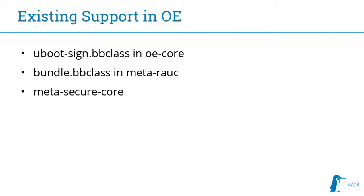You can't easily switch which keys you are using to sign, because you want to have different keys for development and for release. We have support in MetaRAUC for signing bundles — it's important for updating to make sure it's actually authentic. And there's a MetaSecureCore layer; the maintainer has a lot of different technologies supported for basically x86 systems with TPMs and so on, but to me it looks more like an exploration of these technologies than something built to be reusable in a product context.